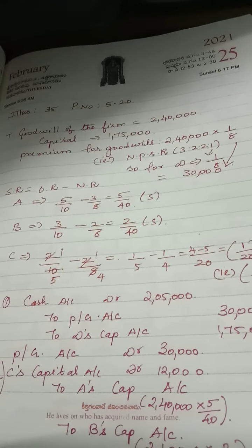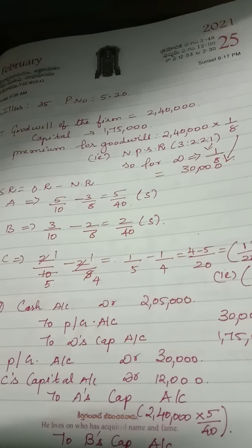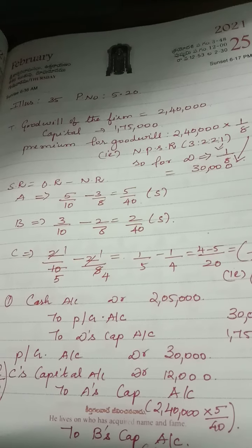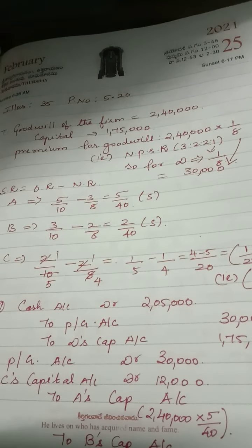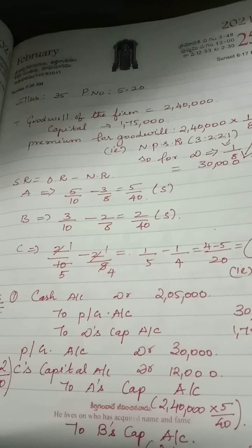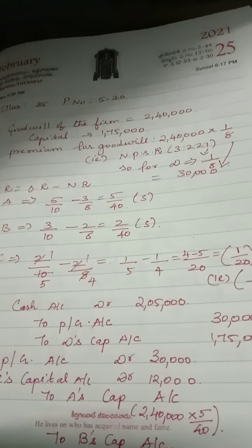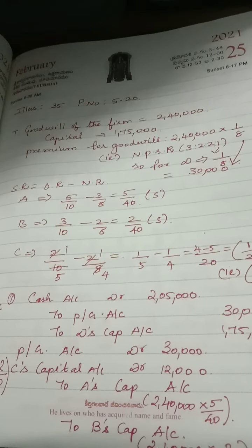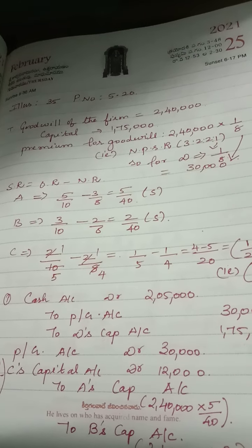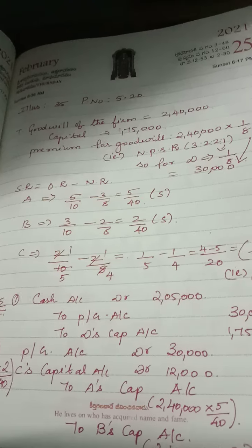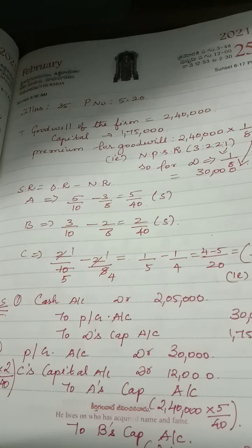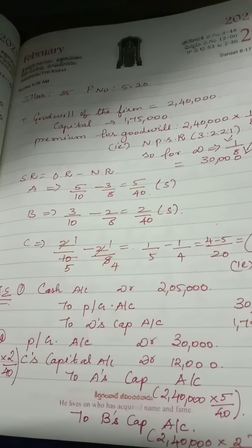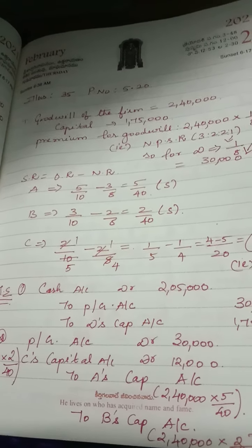In illustration 35, there are three partners A, B and C. The old profit share ratio is 5:3:2. D is the new partner with a share of profit of the firm of 1/8. The new profit share ratio for A, B, C and D is 3:2:2:1. On D's admission, goodwill of the firm was valued at 2,40,000. D brought 1,75,000 as his share of capital and also brought the necessary cash as premium for his share of goodwill.